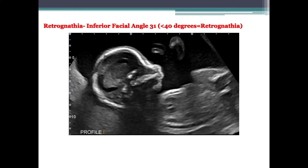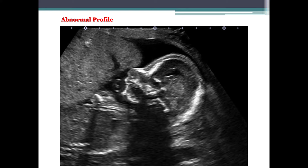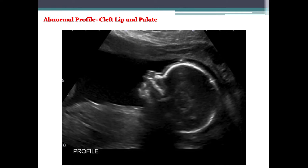Here we have examples of abnormal profiles: one demonstrating retrognathia where the inferior facial angle was only 31 degrees — less than 40 degrees is considered retrognathia. Another example shows a fetus with a significant neural tube defect. And finally, an abnormal profile showing an irregularity to the contour of the face in a fetus with a cleft lip and palate.